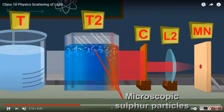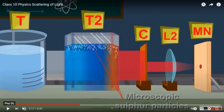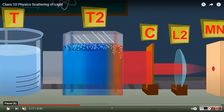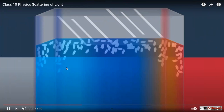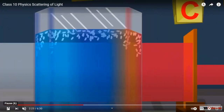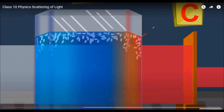The color of the solution changes. From three sides, you see the blue color, and on the fourth side, you will see the red color. The blue color of the solution is because of scattering of the blue light — the colloidal sulfur particles scatter blue light and allow the red light to pass through. The red color appears because red light has a longer wavelength and can only pass through at this point.